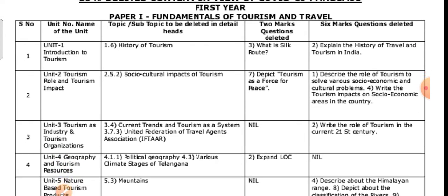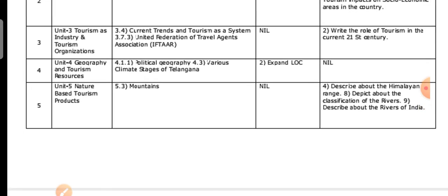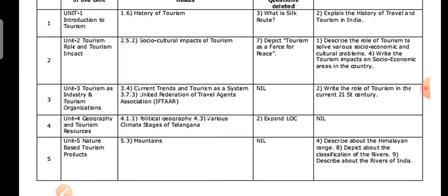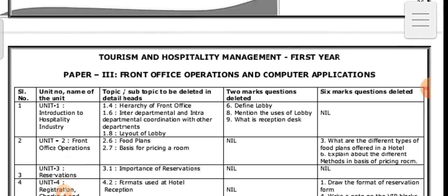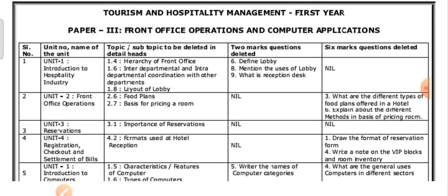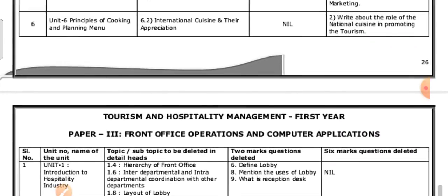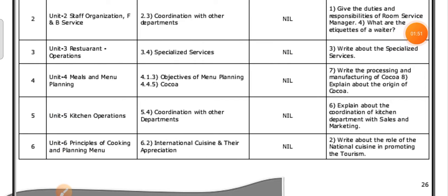These are the 30% deleted content for Paper 1. In this there are 5 units. Next coming to Paper 2 — these are the topics. I will show the continuation of the 5th unit as well. The 5th unit — this is Paper 2 now — Hospitality Service. Paper 2 is Hospitality Service.